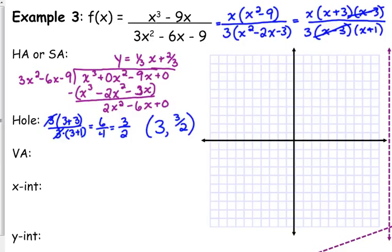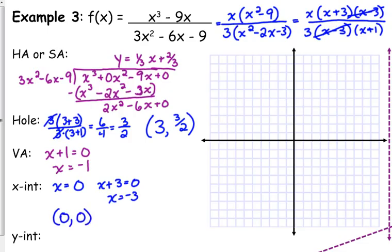Okay. So we have a vertical asymptote. What's left in the denominator, we set equal to 0 and solve. So we have a vertical asymptote at negative 1. x-intercept, we take our simplified numerator and set it equal to 0. Well, we have two pieces in the simplified numerator. We have x and we have x plus 3. So here's an example of where we have two x-intercepts. 0, 0, and negative 3, 0.